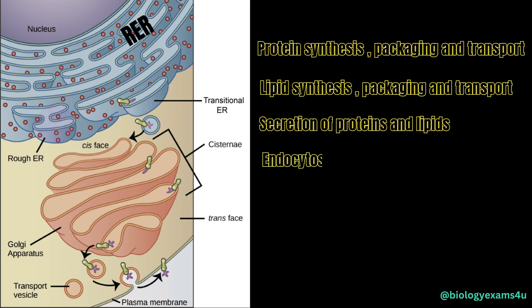The fourth function is endocytosis, where the plasma membrane engulfs materials from the environment — such as food or pathogens — for intracellular digestion, and these materials are transported into the cell by means of vesicles. Finally, the system is also involved in detoxification reactions, especially the SER, which is involved in the detoxification of drugs and other harmful substances.